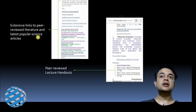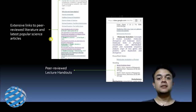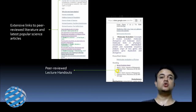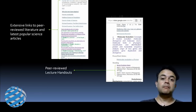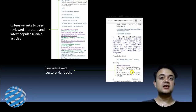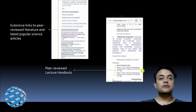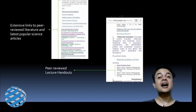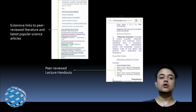The site has extensive links to peer-reviewed literature and the latest popular science articles, which I update at least once every few months. I also tend to publish my lecture handouts separately in peer-reviewed journals — for example, in Resonance, published by the Indian Academy of Sciences, a well-respected journal. This actually makes your lecture handouts much higher quality because they have passed through an independent peer review process.